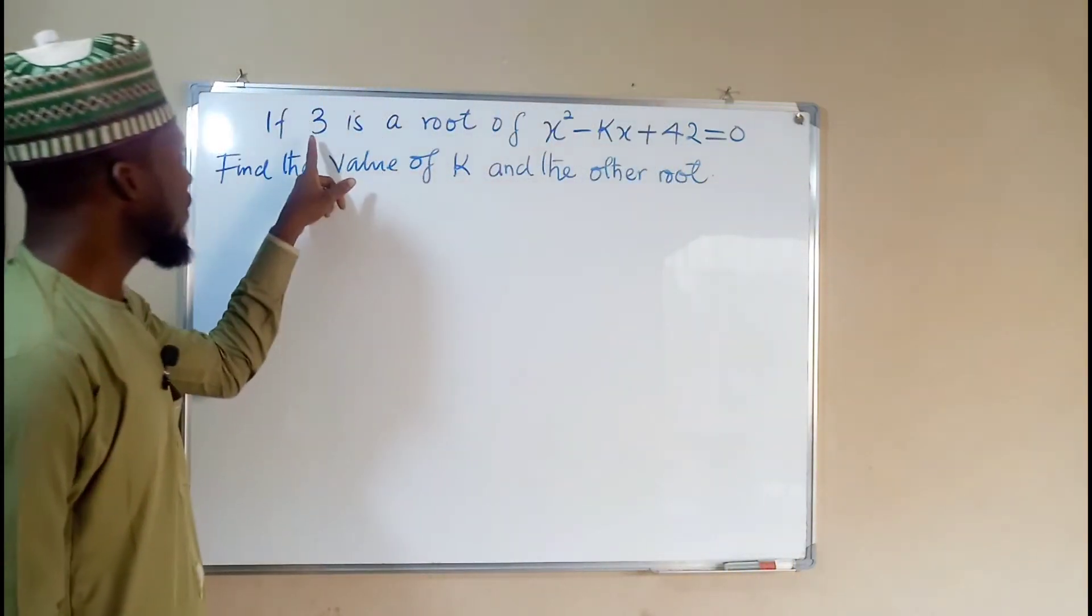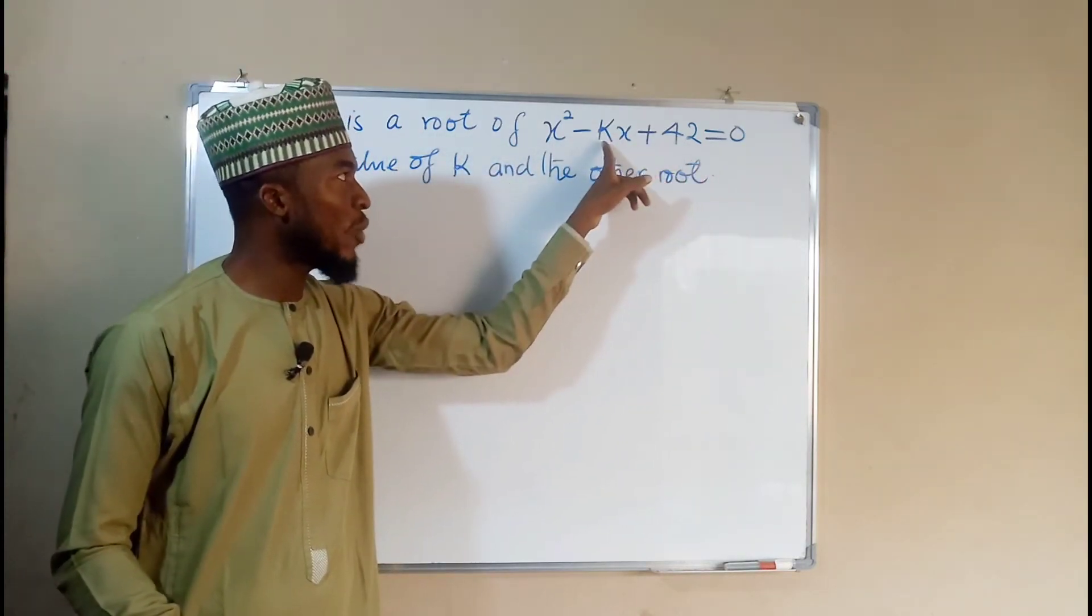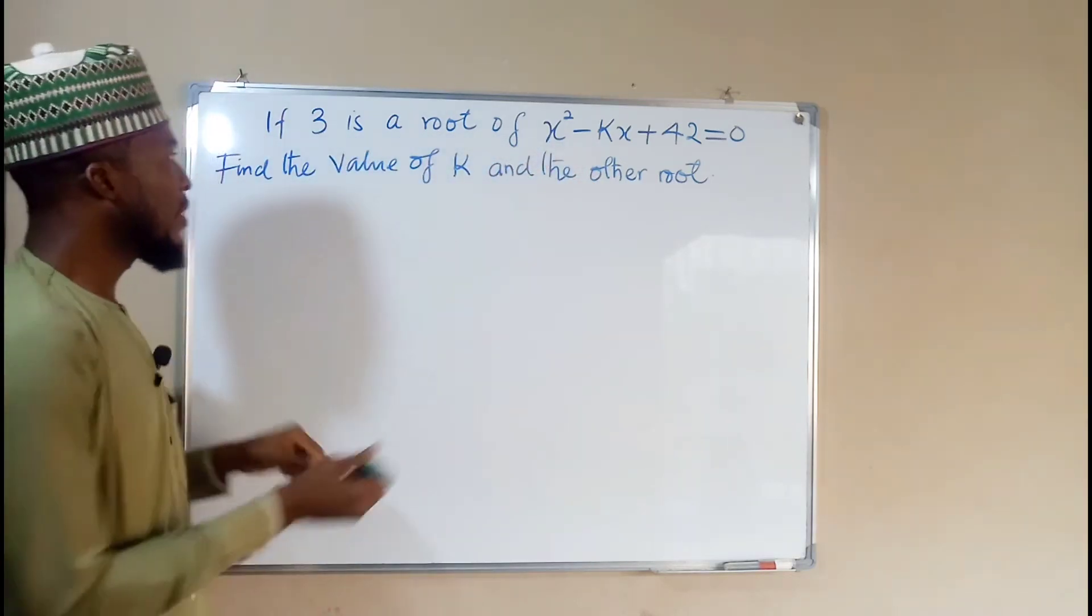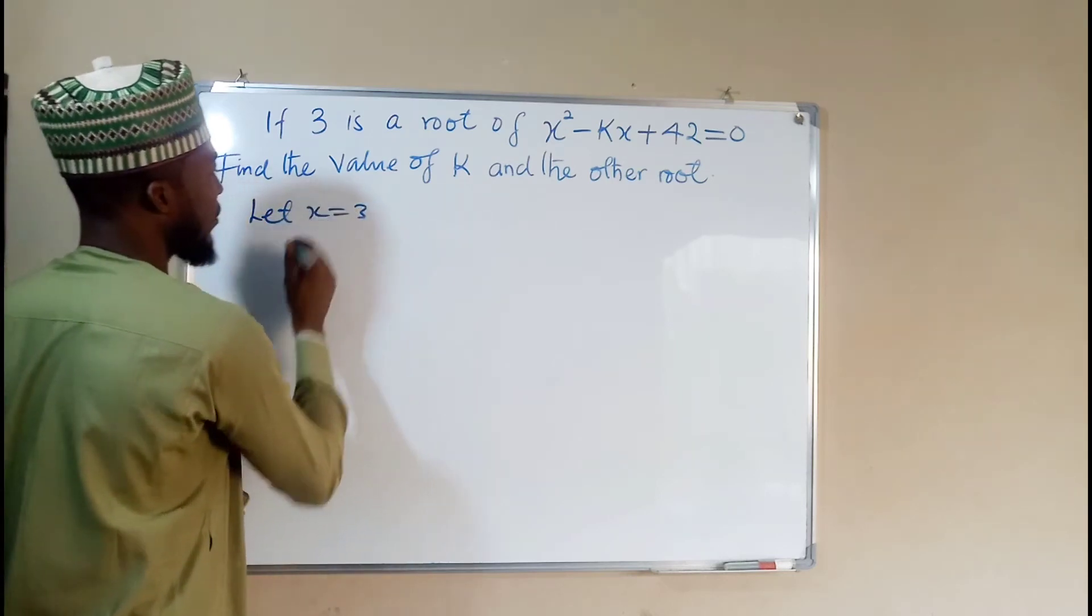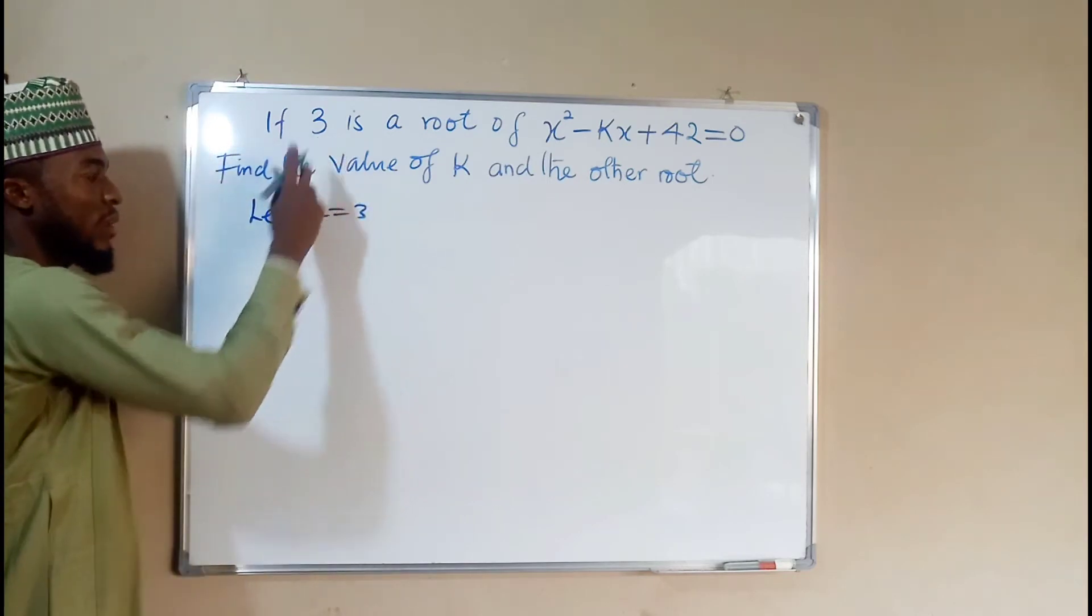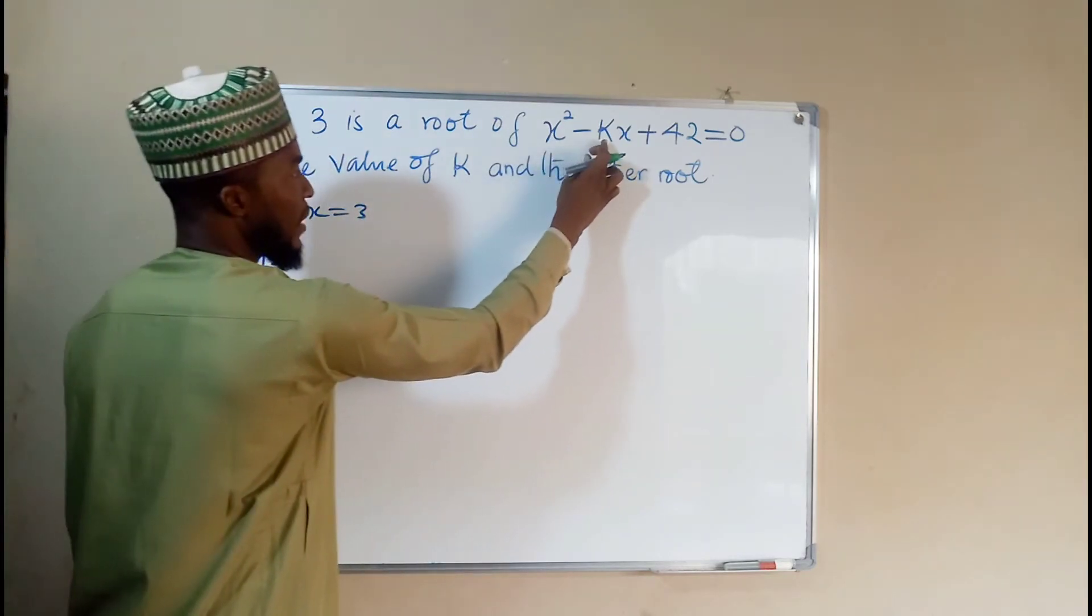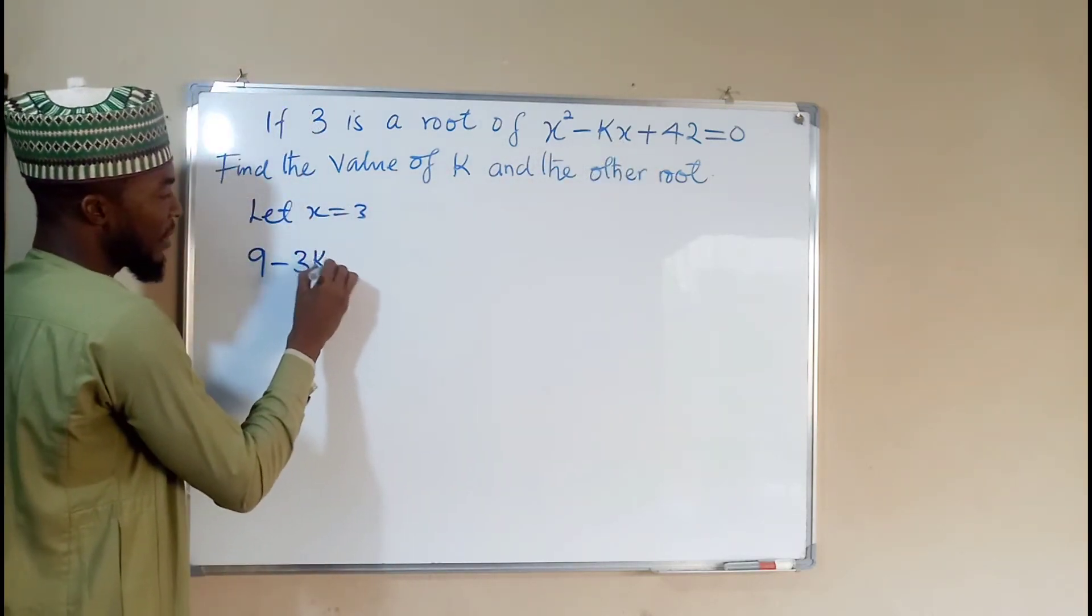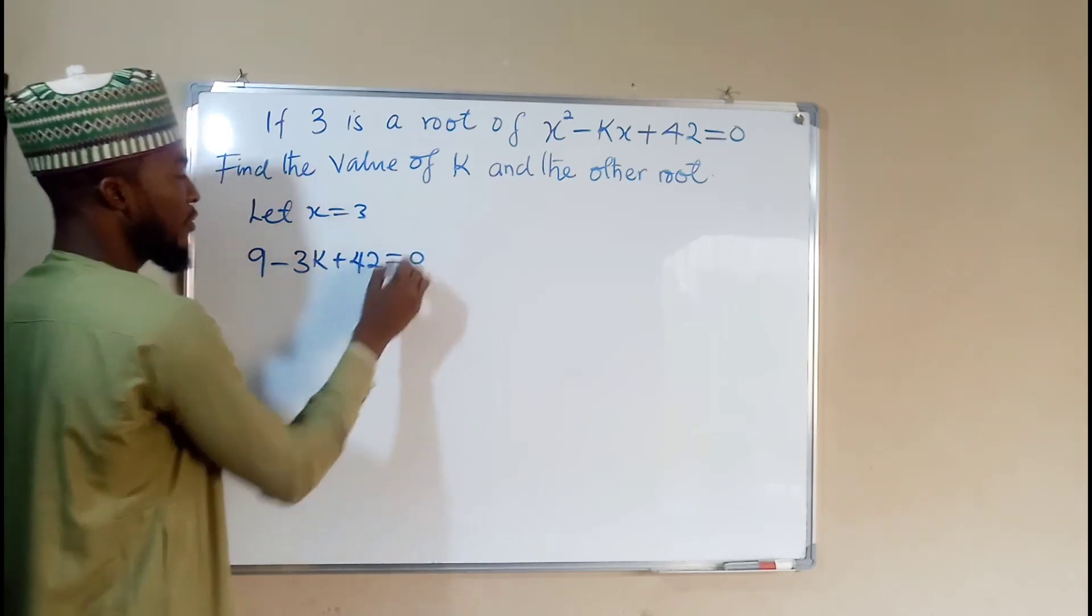Since 3 is one of the roots of this quadratic equation, to find the value of k, we are going to substitute the value of x equal to 3 in this equation. So let x equal to 3. We have x squared meaning 3 squared, which is 9, minus k times x meaning k times 3, which is 3k, plus 42, the whole of this equal to 0.